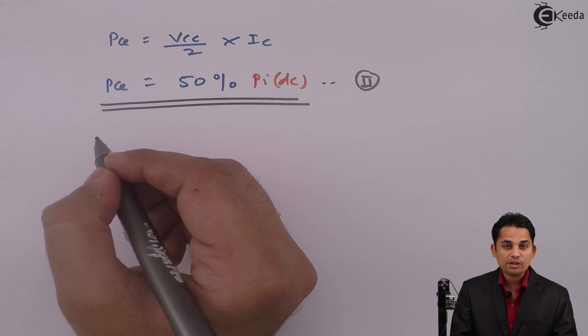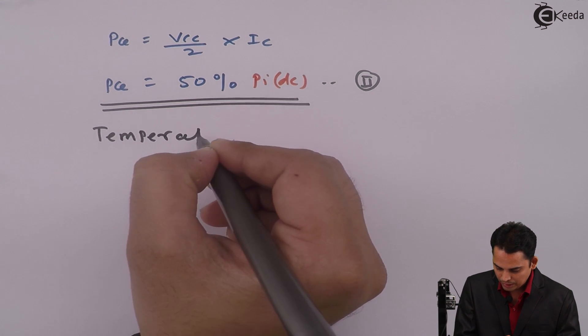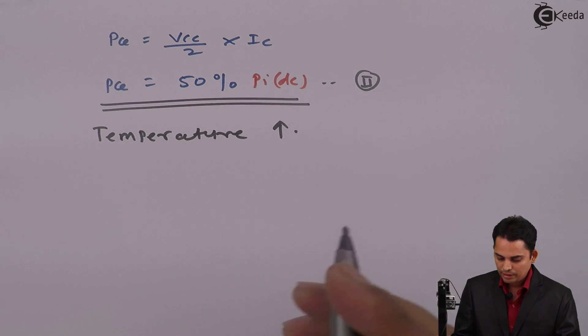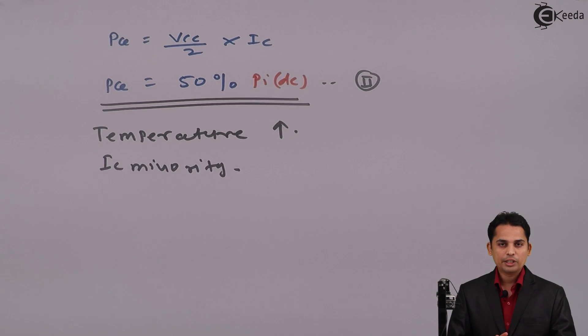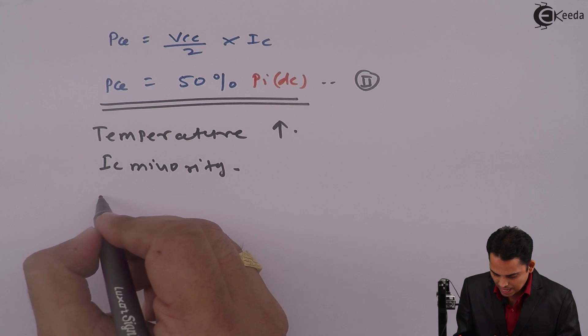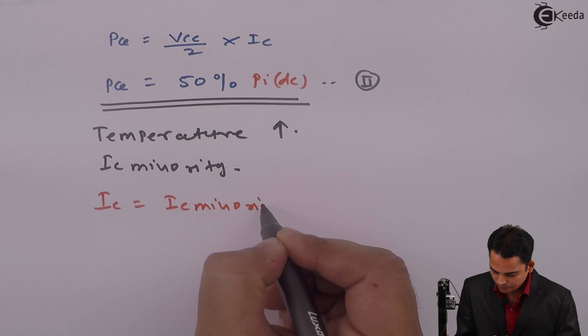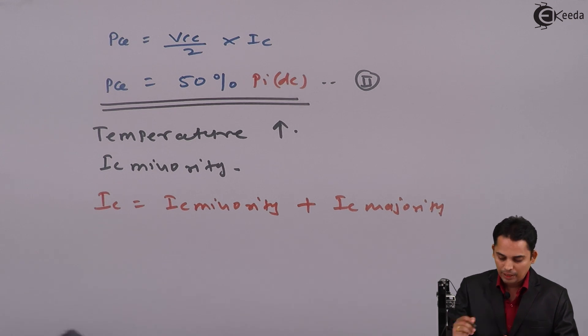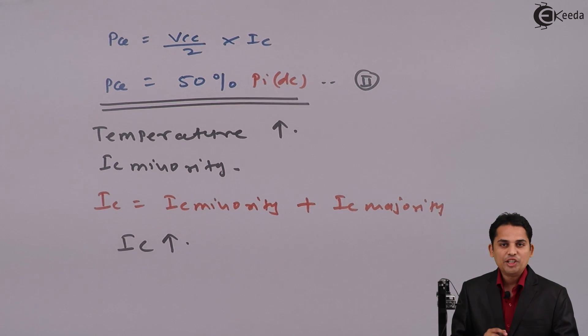Hence, we can write that temperature increases. As temperature increases, IC minority will increase. This is minority current from collector. We know that IC is equal to IC minority plus IC majority. And hence, ultimately, because of increment in the temperature, IC will increase.